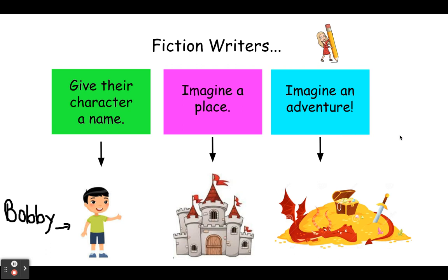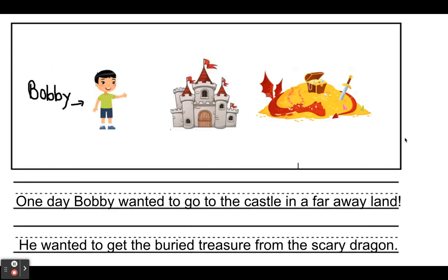I wrote a short story today — just a few sentences. It says: 'One day, Bobby wanted to go to the castle in a far away land!' I did an exclamation point there because I was really excited about my character traveling to a castle in a far away land. We put exclamation points at the end of a sentence whenever we want to express excitement. My next sentence says: 'He wanted to get the buried treasure from the scary dragon.'